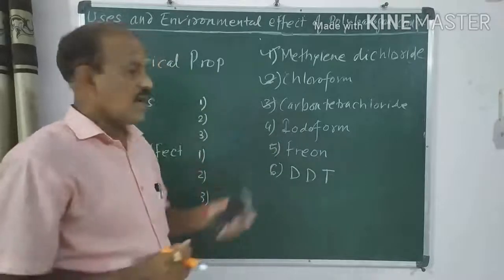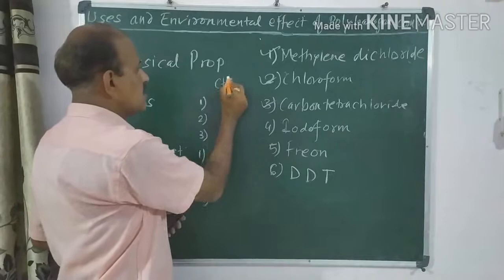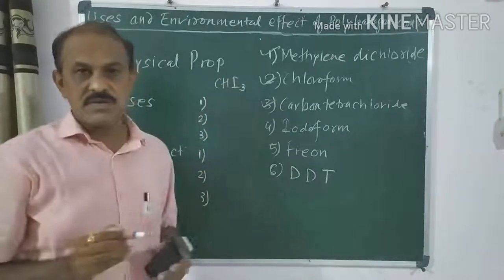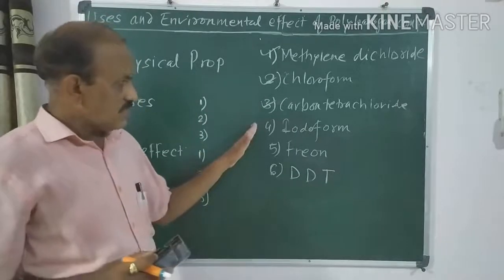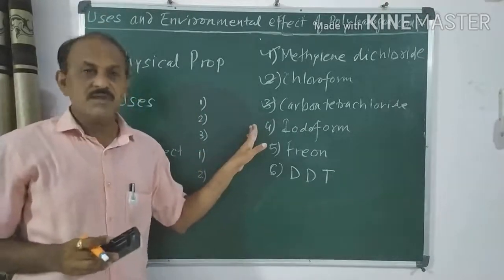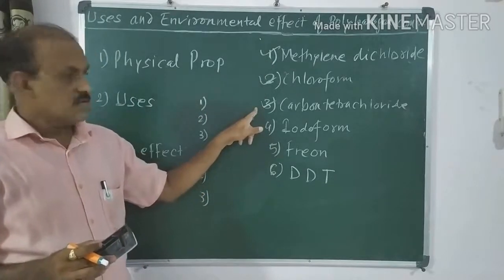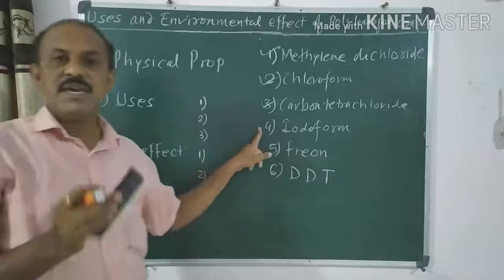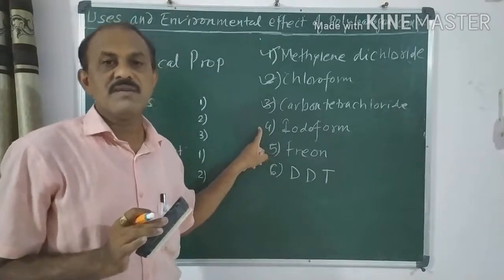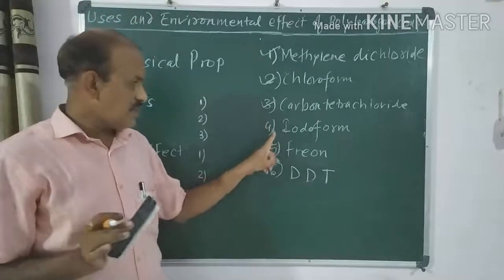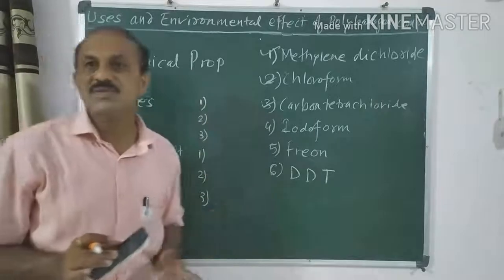The next polyhalogen compound is iodoform, which has the formula CHI₃. Regarding its physical properties, iodoform is a pale yellow crystalline solid with a very bad smell.